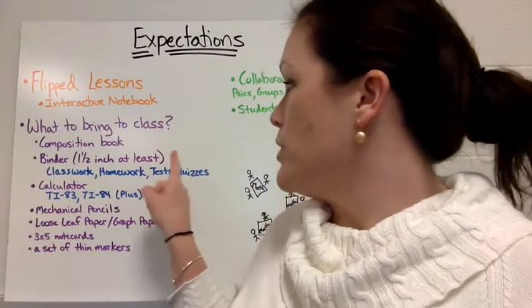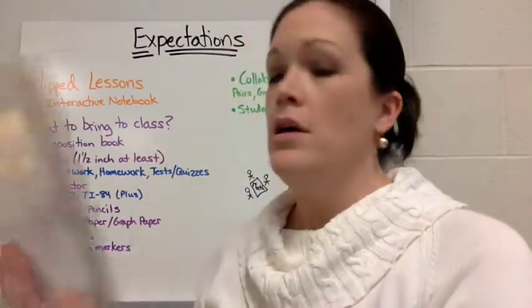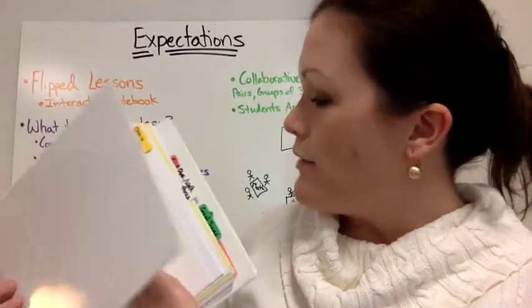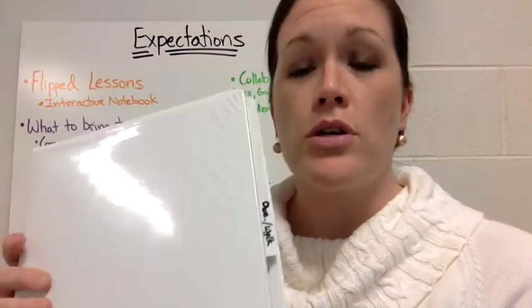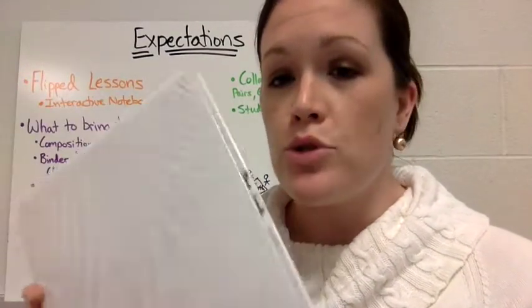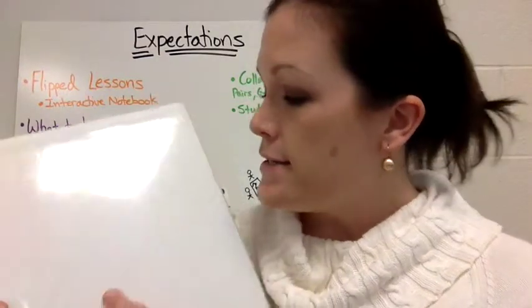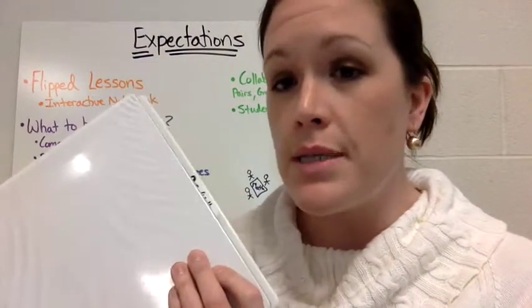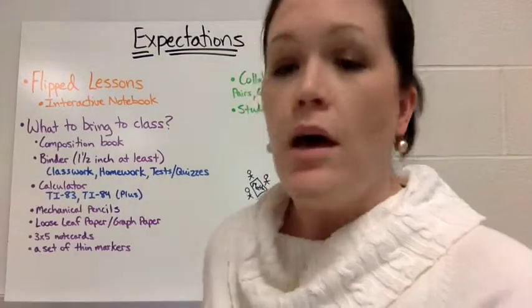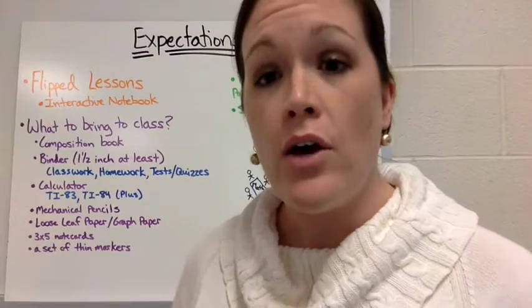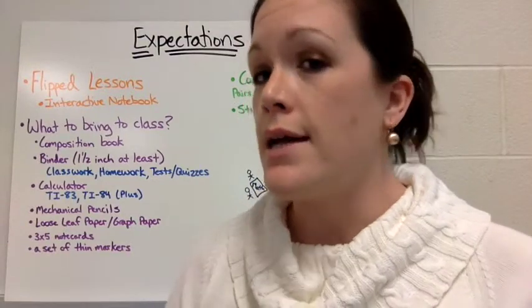The first thing is a composition book — it has all the pages connected so you're not going to be tearing them out. The next thing we need is a binder with three rings. You want to have some dividers to keep your classwork, your homework, maybe some loose notebook paper, tests, and quizzes in this binder. That's also a good place to put your course syllabus.